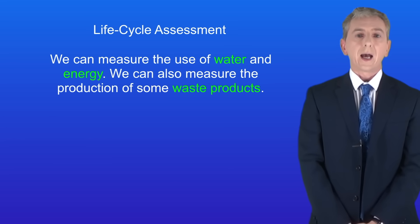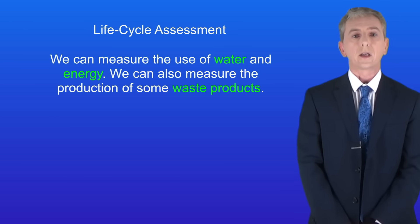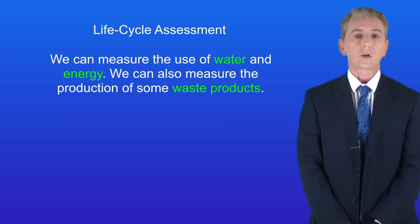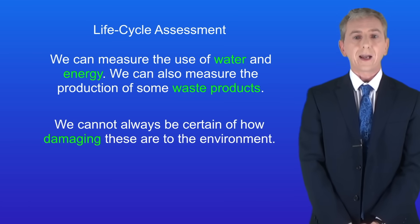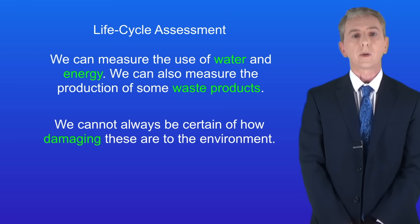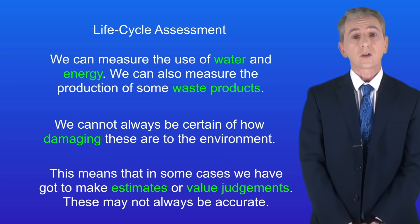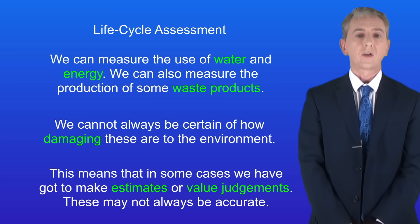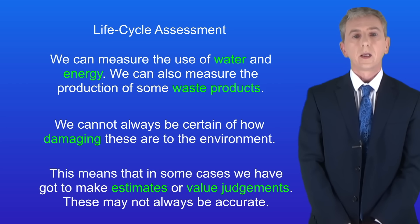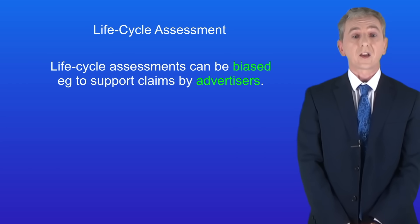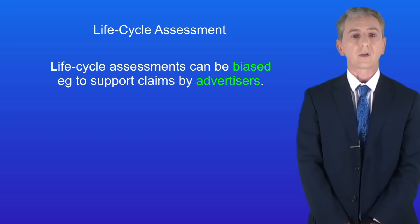We can measure the use of water and energy, and we can also measure the production of some waste products. The problem is that we cannot always be certain how damaging these are to the environment. This means that in some cases we have to make estimates or value judgments, and these may not always be accurate. The other problem is that life cycle assessments can be biased, for example to support claims by advertisers.